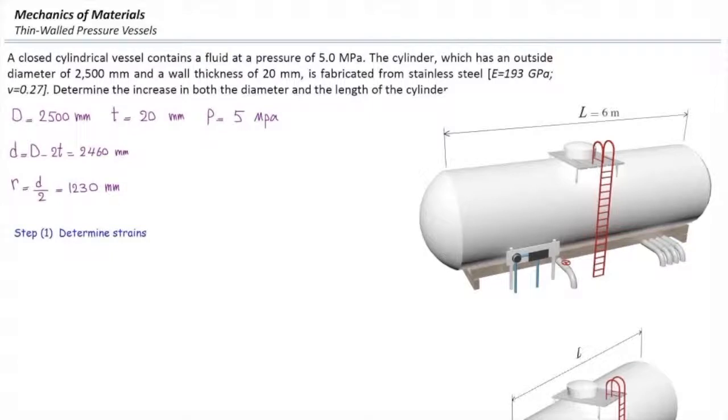Now let me determine strain in the longitudinal direction. Strain in the longitudinal direction is PD over 4TE, or PR over 2TE, depending on whether we use radius or diameter, multiplied by 1 minus 2ν.